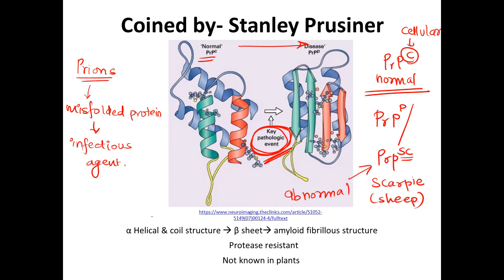If you look at the normal structure — the 3D arrangement — it has a lot of alpha helical coils. It has a very coiled structure. But when this normal PrPC is misfolded during this disease, you see that the alpha helical structures have been converted to beta pleated sheets. The number of alpha coils has reduced and the beta sheets have increased.